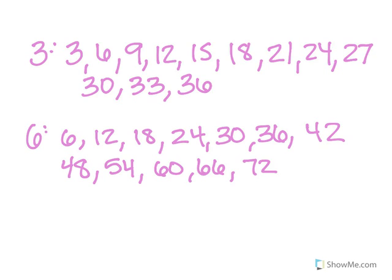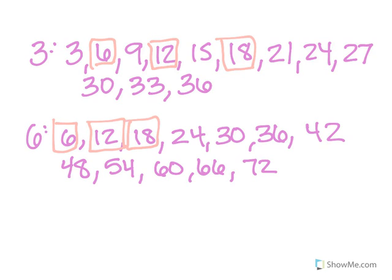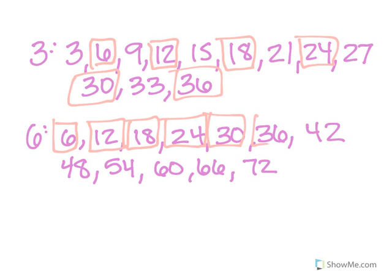And now I look for the common multiples — the ones that they have that are the same. So I look: 3, nope, no 3 down here. But I do see there's a 6 and a 6 — that's a common multiple. 9, no 9. 12, 12 — common multiple. Keep going. 18, 18. No 21, but there are two 24s. Keep going. 30, 30. 36, 36. So there are a lot of common multiples.